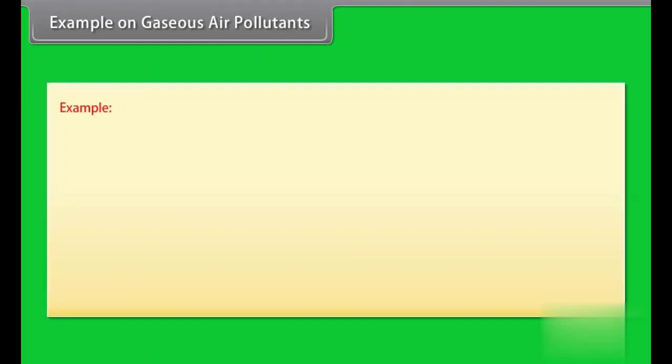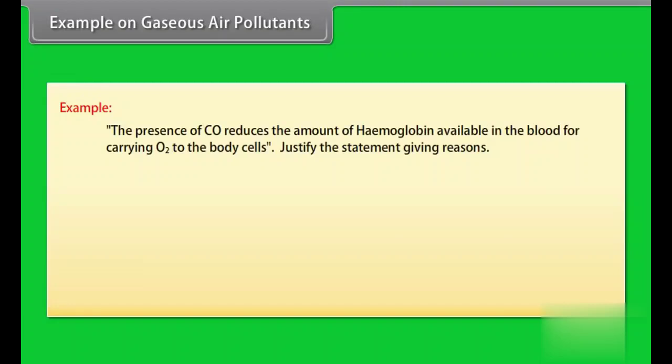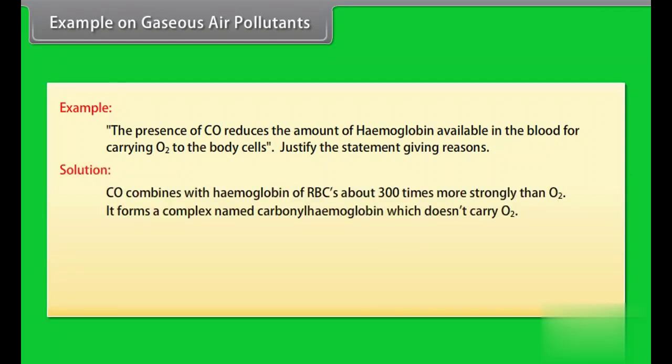Example on gaseous air pollutants. The presence of CO reduces the amount of hemoglobin available in the blood for carrying O2 to the body cells. Justify the statement giving reasons. Solution: CO combines with hemoglobin of red blood cells about 300 times more strongly than O2. It forms a complex named carbonyl hemoglobin, which doesn't carry O2. Thus, the O2 carrying capacity of hemoglobin gets reduced.